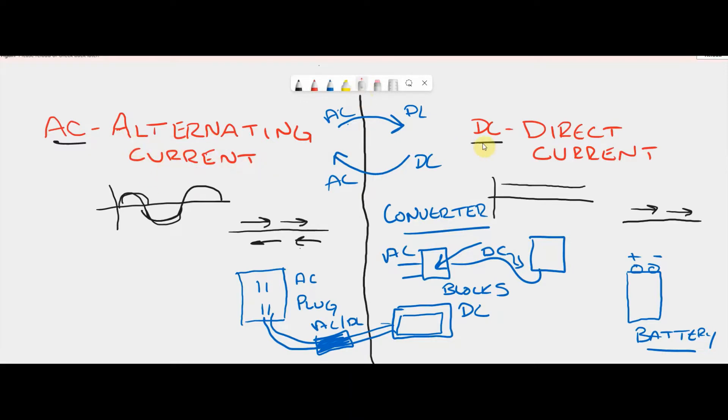AC is alternating current. DC is direct current. Alternating current flows one way, and then turns and flows the other way. Direct current does not change direction. It's constant.